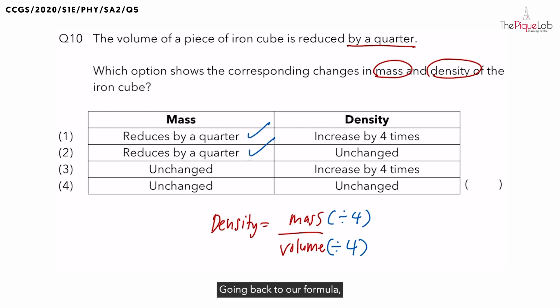Going back to our formula. So what happens if you do the same thing to both the top and bottom of a mathematical formula? If both the mass and volume change equally, mathematically, you can cancel it off. Will density change? No, the density still stays the same. So density of the object changes only if the mass and volume change at different rates.